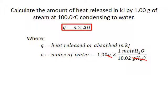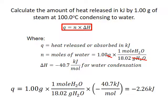We set up our conversion so that grams cancel out, leaving us with moles — one mole in the numerator and 18.02 grams in the denominator. Delta H is the enthalpy value for the phase change and substance. For the condensation of water, this is negative 40.7 kilojoules per mole. Putting it all together: one gram times one mole of water divided by 18.02 grams of water times negative 40.7 kilojoules per mole equals negative 2.26 kilojoules. Our grams and moles cancel out, leaving us with final units of kilojoules.